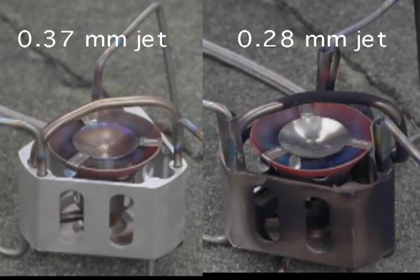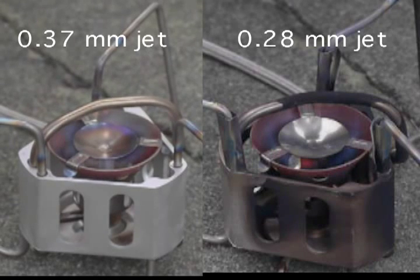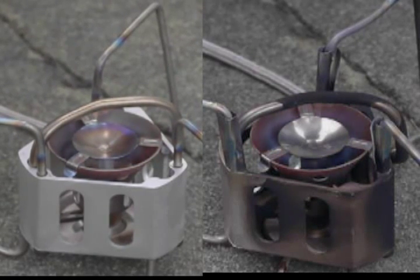This is just simply showing what the simmering is like for the respective jets. Again, the 0.37 millimeter jet on the left, the 0.28 millimeter jet on the right, and I'm getting these down as slow as they will go.